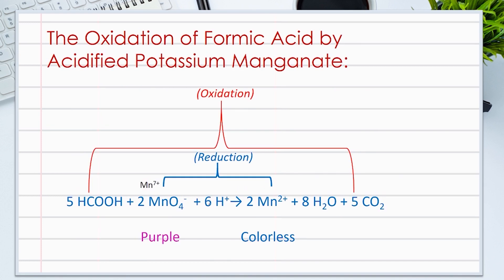Let's first look at the reaction of formic acid with acidified potassium manganate. 5 moles of formic acid HCOOH reacts with 2 moles of manganate ions MnO4- and 6 moles of hydrogen ions H+. We mean here the hydrogen of the sulfuric acid H2SO4. To give 6 hydrogens, this means we need 3 moles of sulfuric acid.